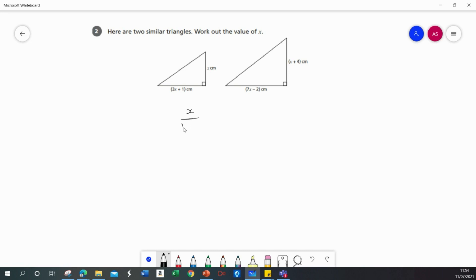So x over 3x plus 1 will equal x plus 4, the corresponding sides, over 7x minus 2.